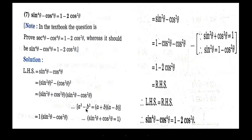According to the identity A square minus B square equals A plus B into A minus B, we have sin square theta plus cos square theta into sin square theta minus cos square theta. We also know the identity sin square theta plus cos square theta is equal to 1. So we substitute 1 in place of sin square theta plus cos square theta, giving us 1 into sin square theta minus cos square theta.